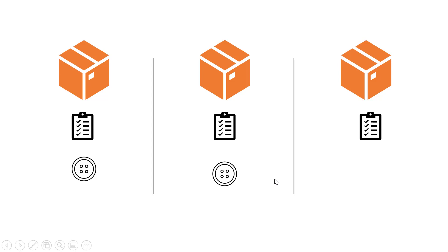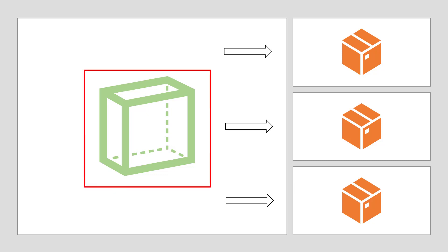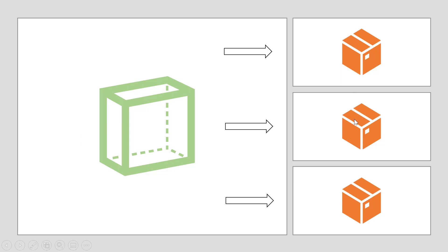How can we resolve this problem? What if we create a separate module — just like we did in the previous video where we created a shared module — and in that shared module we add all the Angular Material components? All the Angular Material modules are imported in the shared module, and we use this shared module in all other application modules. Using this approach, we can fix the code duplicacy problem.